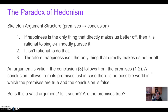To break the argument into skeleton form: Premise 1 is — if happiness is the only thing that directly makes us better off, then it is rational to single-mindedly pursue it. That seems like a plausible assumption and something the hedonist is committed to. It's an if-then statement: if happiness is the only thing that makes us better off, then it's rational to make that my primary goal and devote all my energy toward its pursuit — if I truly believe it's the only thing that directly makes us better off.